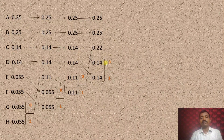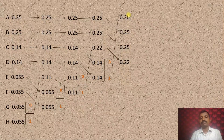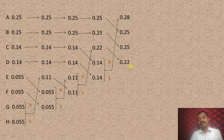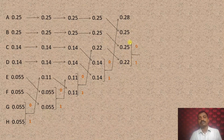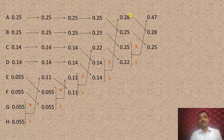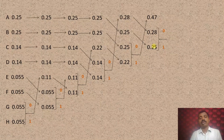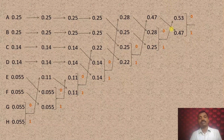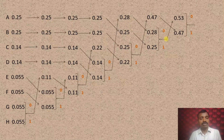The combined probability 0.28 is placed at the top, and then 0.25 and the other symbols are moved accordingly. There are now four symbols with four probabilities, so we continue the procedure. 0.25 plus 0.25 gives 0.47, which is placed at the top. Then combine the last two symbols, 0.28 and 0.25, giving 0.53. Then 0.47 is brought here. We combine the last two symbols and assign 0 for one and 1 for the other. With this, the Huffman procedure is complete.